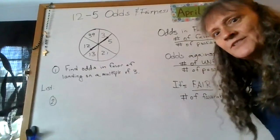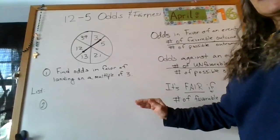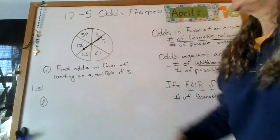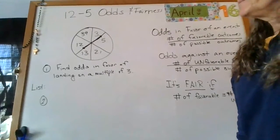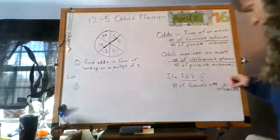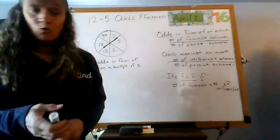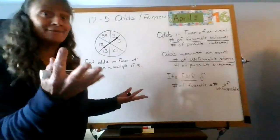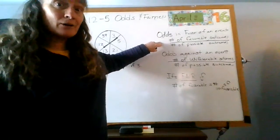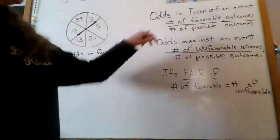I have stuff up here already for you. It is 12.5 — odds and fairness. Odds in favor and odds against. Would you copy down this spinner — I just put a pretend arrow there. I'm going to push this out and we'll go for it. I have continually lost black markers today; this is like the fifth black marker. I have no clue where they're going.